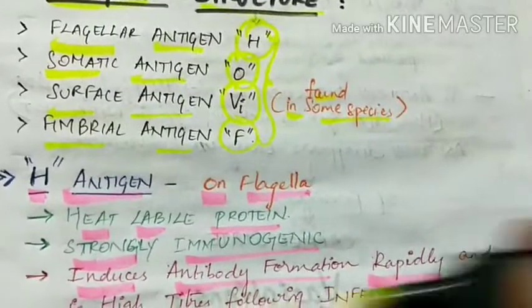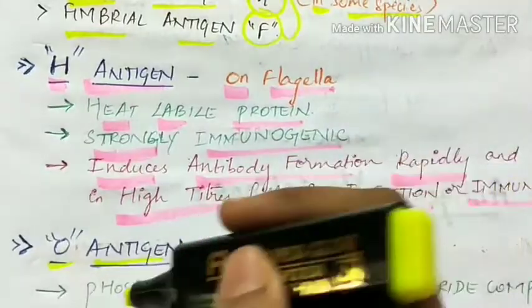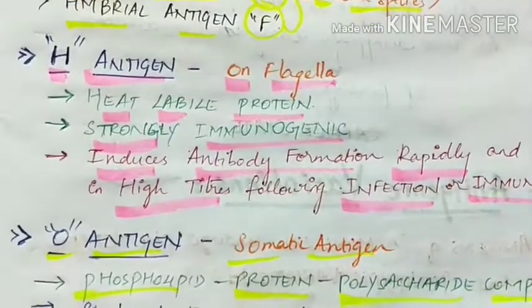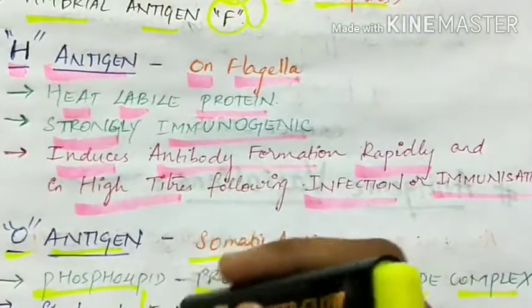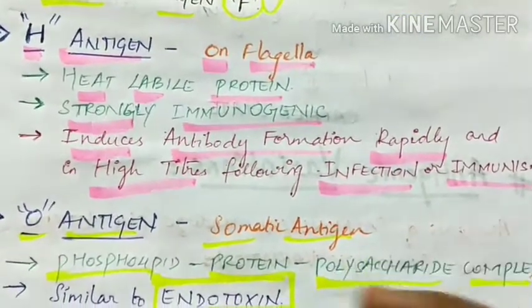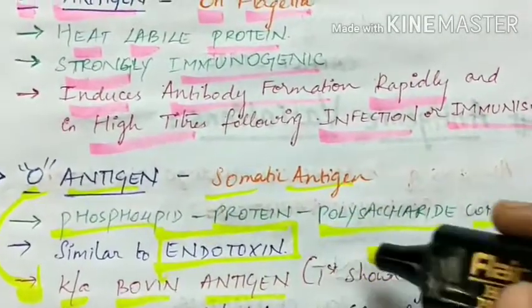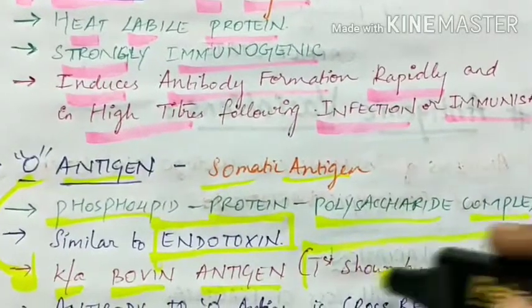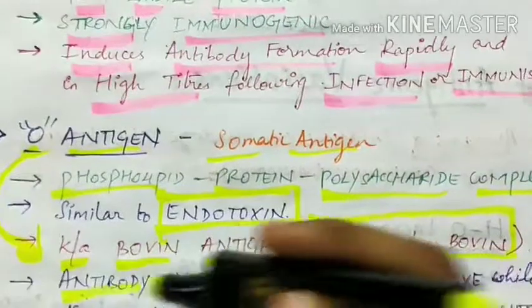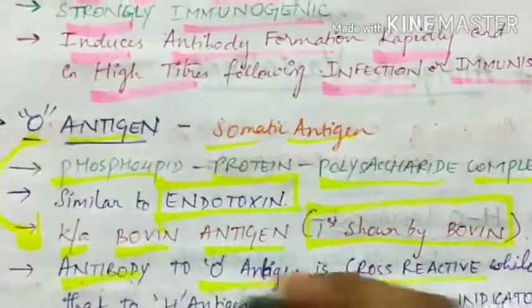Second is O antigen, that is somatic antigen present in the cell body. It is a phospholipid-protein-polysaccharide complex and it is similar to the endotoxin, that is lipopolysaccharide. This O antigen is known as Boivin antigen because it was first shown by a scientist called Boivin. The antibody to O antigen is cross-reactive, while the antibody to H antigen is more reliable indicator.